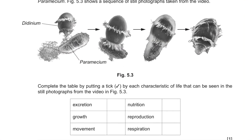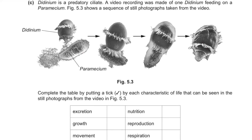Part C. Didinium is a predatory ciliate. A video recording was made of one Didinium feeding on a Paramecium. Figure 5.3 shows a sequence of still photographs from the video. Complete the table by ticking characteristics of life visible in the photographs. Excretion — no, nothing is being released. Nutrition — yes, Didinium is feeding on Paramecium. Growth — no, size remained the same. Reproduction — no, nothing was produced. Movement — yes, the position of the two organisms changed constantly. Respiration — no, we should see a product being released but there is nothing here. Only nutrition and movement are correct.